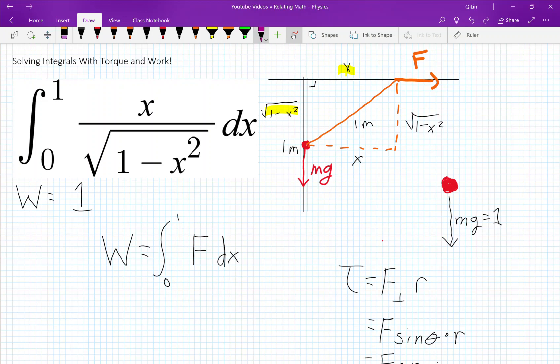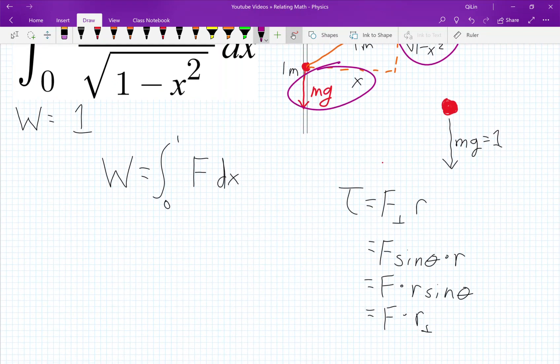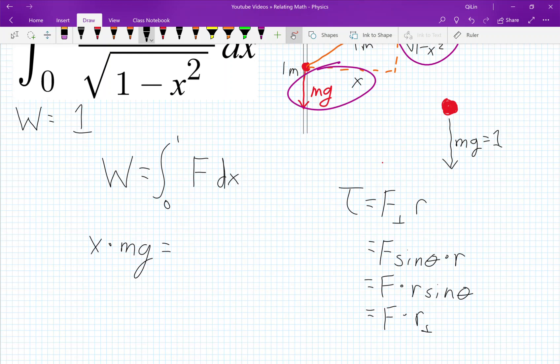So we know that the torque here between x and mg is equal to the torque here between the force applied times the square root of 1 minus x squared. So let's write that down. x times mg is equal to the square root of 1 minus x squared. That's the second lever arm times the force applied.